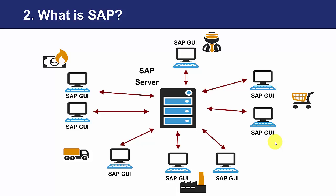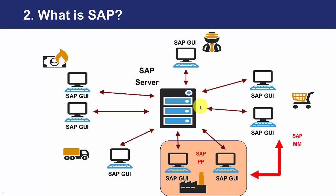If we come back to the main picture, we can see that this module includes all the processes performed by the production departments. These processes are closely related to the purchasing and inventory control ones — SAP MM — to know what we can produce and to update inventory levels once the manufacturing process has finished. It is also closely related to SAP SD, the sales and distribution module, to know what we need to manufacture and to notify when it is ready. Additionally, it has an impact on finance and controlling, to know how much it costs us to manufacture our product.